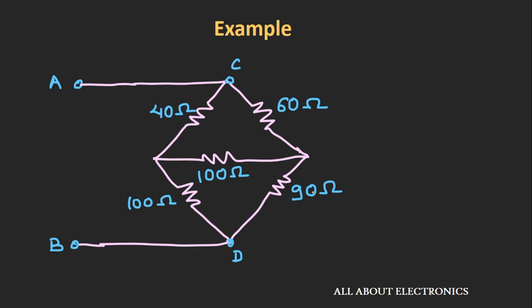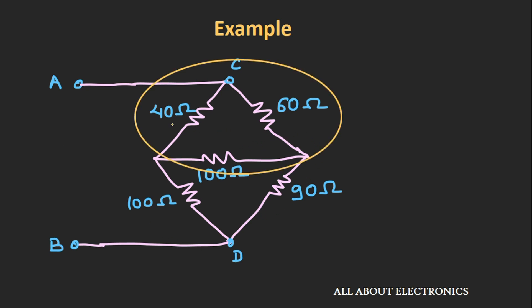Now let's look at one example to understand how this delta-to-star conversion is useful in solving circuit problems. We have a given circuit and we need to find the equivalent resistance between nodes A and B. This circuit is neither in series nor parallel combination. But the circuit contains two delta networks: the first delta network consists of resistors 40 ohm, 60 ohm, and 100 ohm; and the second delta network consists of 100 ohm, 90 ohm, and 100 ohm.